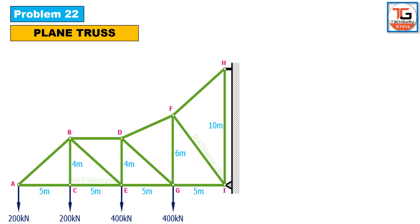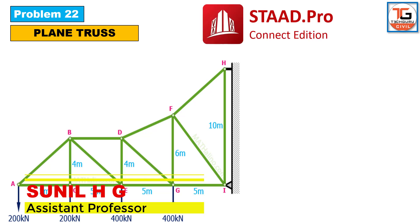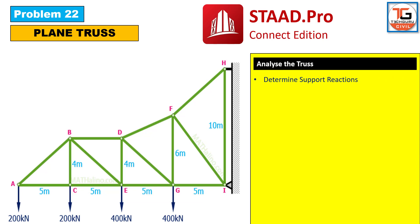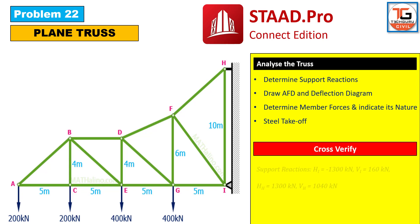Hi, welcome to techkuru.civil. In this session, we are going to discuss the plane truss problem, problem number 22. We are going to analyze this problem by using STATPRO Connect Edition. Our task is to analyze the truss in order to determine the support reaction, draw AFD and deflection diagram, then determine the member forces and indicate its nature, finally steel takeoff. Along with this, we need to cross verify the hand calculation results provided with the STAT analysis results.